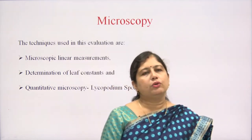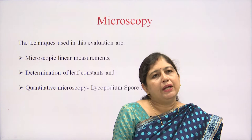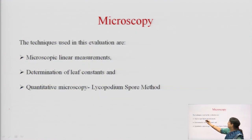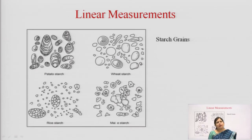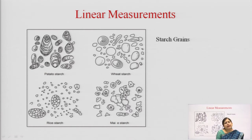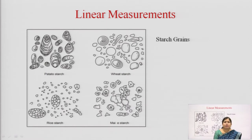We have already understood that microscopic evaluation mainly deals with three parts: linear measurement, determination of leaf constants, and quantitative microscopy by the Lycopodium spore method. To begin with, we will have a brief overview of linear measurements. Generally, plants have certain characteristic structures such as starch grains, calcium oxalate crystals, phloem fibers, and other peculiar structures which we can determine using microscopic techniques.